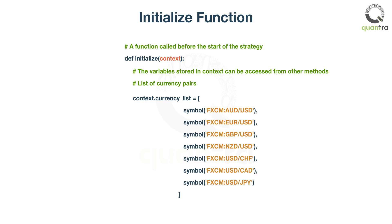Since we have stored the currency_list in context, it can be accessed by other methods. The symbol function is used to select a currency pair by its ticker and data source.